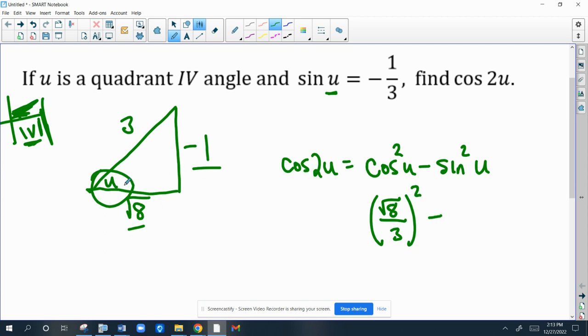Minus sine squared U. Well, sine of U is opposite over hypotenuse. And I'm going to have to square that.